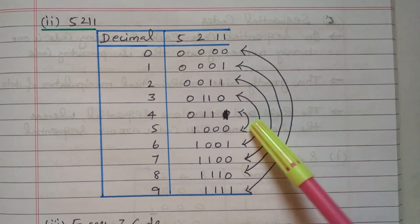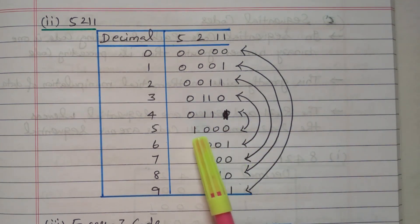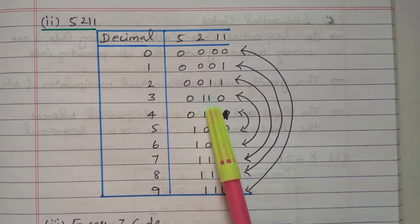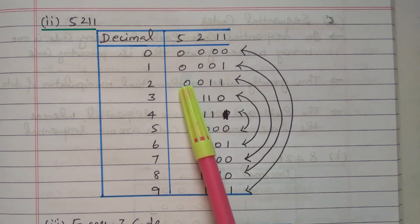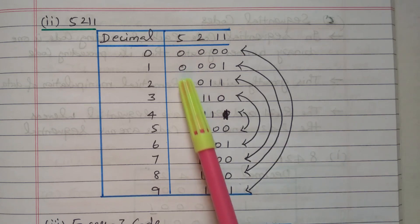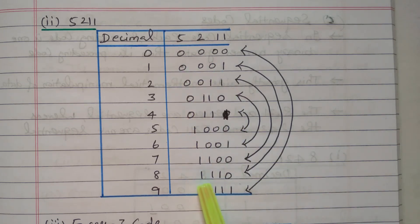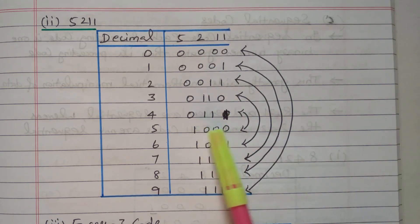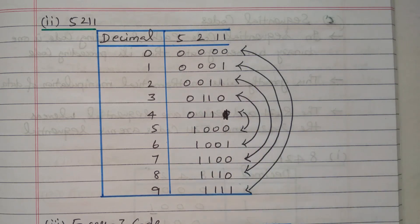Now we will see the reflective property of 5211. Code four is 0,1,1,1 and code five is 1,0,0,0 — both are complement, so 4 and 5 are complement. Code three is 0,0,1,1 and code six is 1,1,0,0 — wait, code six is 1,0,0,1 — 3 and 6 are complement. Code two is 0,0,1,1 and code seven is 1,1,0,0 — 2 and 7 are complement. Code one is 0,0,0,1 and code eight is 1,1,1,0 — both are complement. Code zero is all 0's and code nine is all 1's — 0 and 9 are complement. So 4 and 5, 3 and 6, 2 and 7, 1 and 8, 0 and 9 are all reflective pairs.